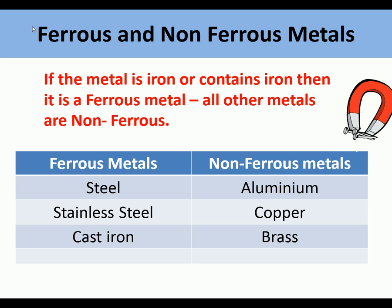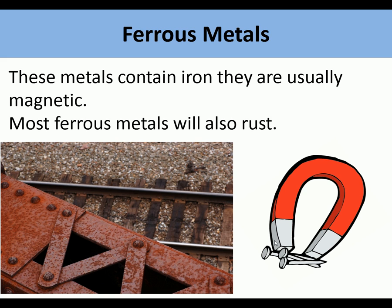If the metal is iron or contains iron, then it is a ferrous metal. All other metals are non-ferrous. Ferrous metals include steel, stainless steel, and cast iron. Non-ferrous metals include aluminium, copper, and brass. Most ferrous metals contain iron and are usually magnetic. Most ferrous metals will also rust or oxidise when exposed to moisture and oxygen.